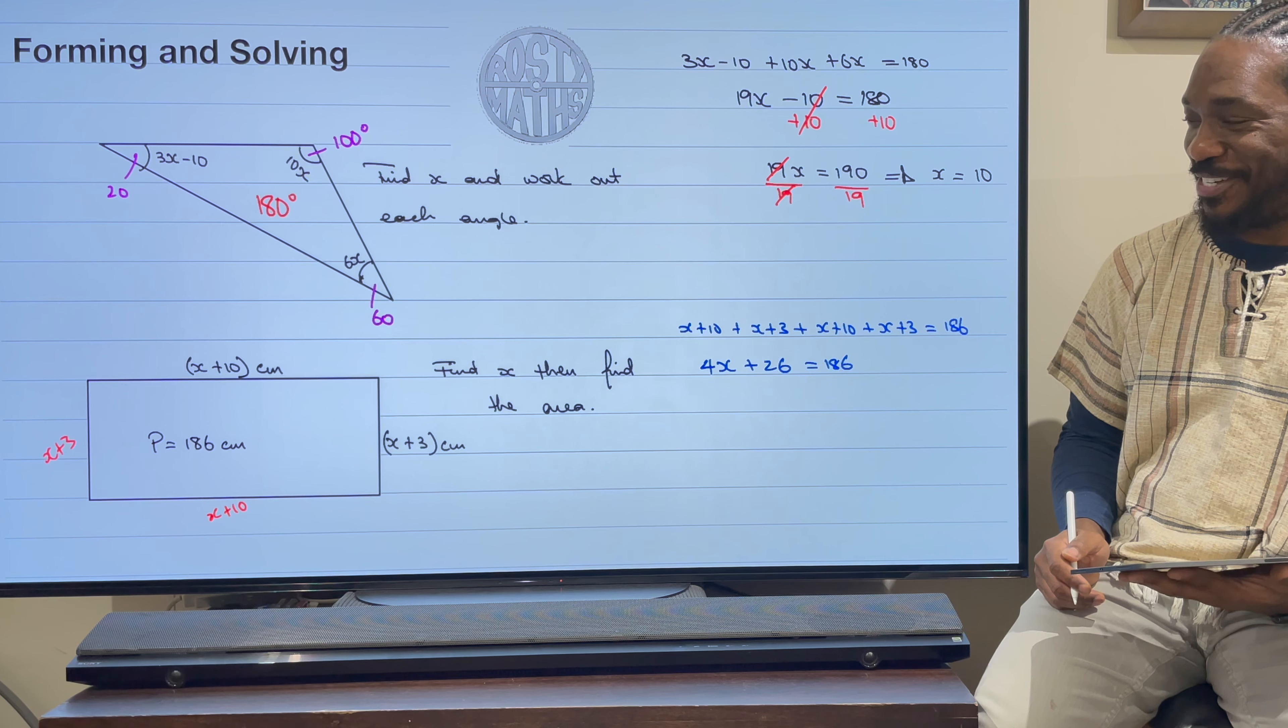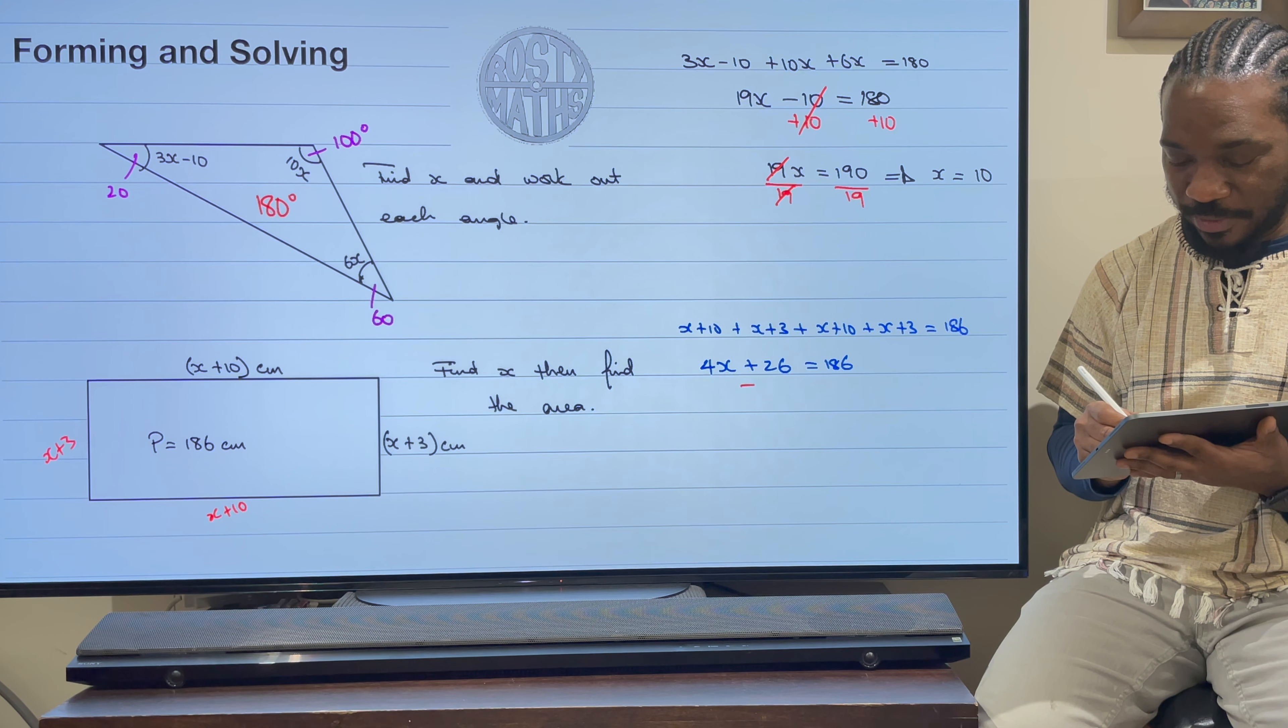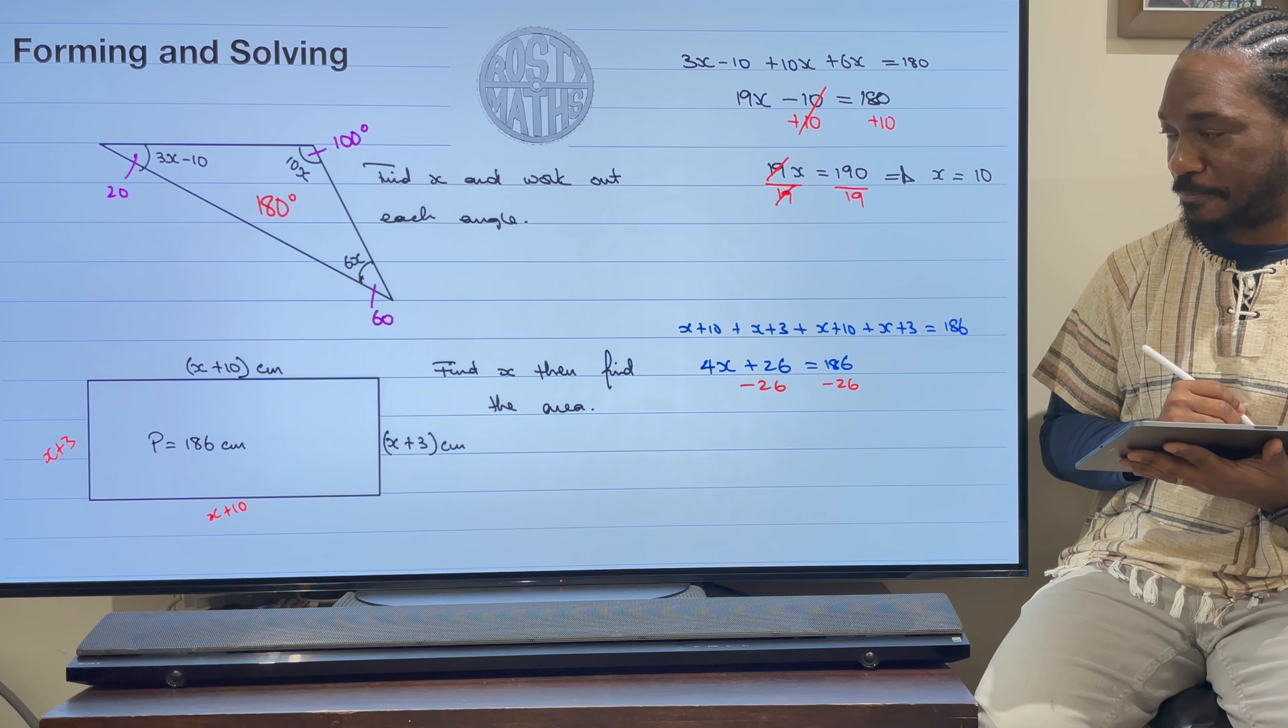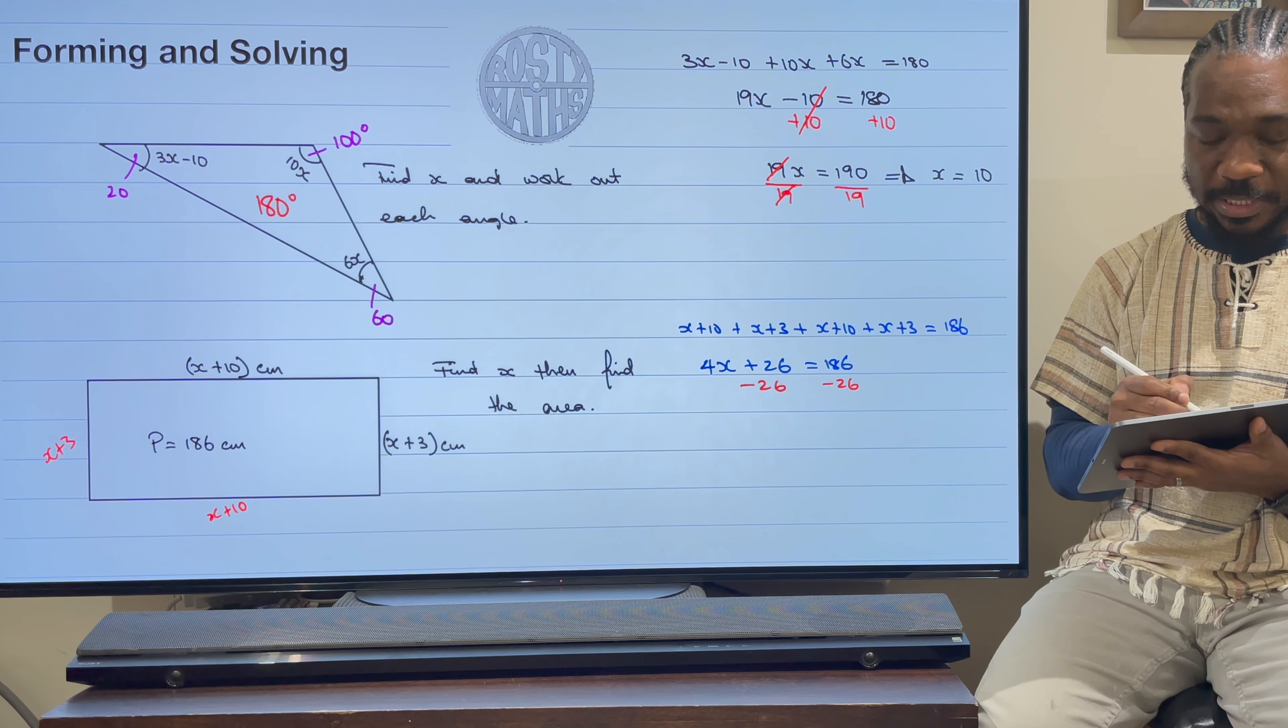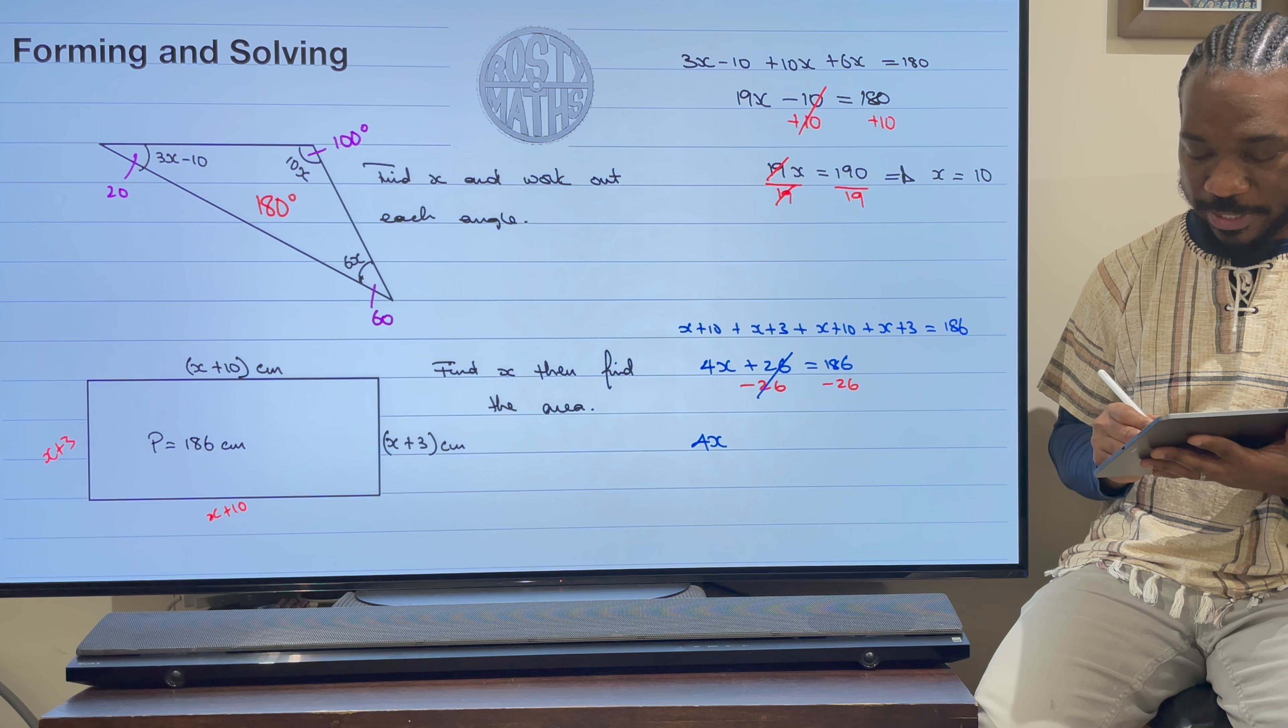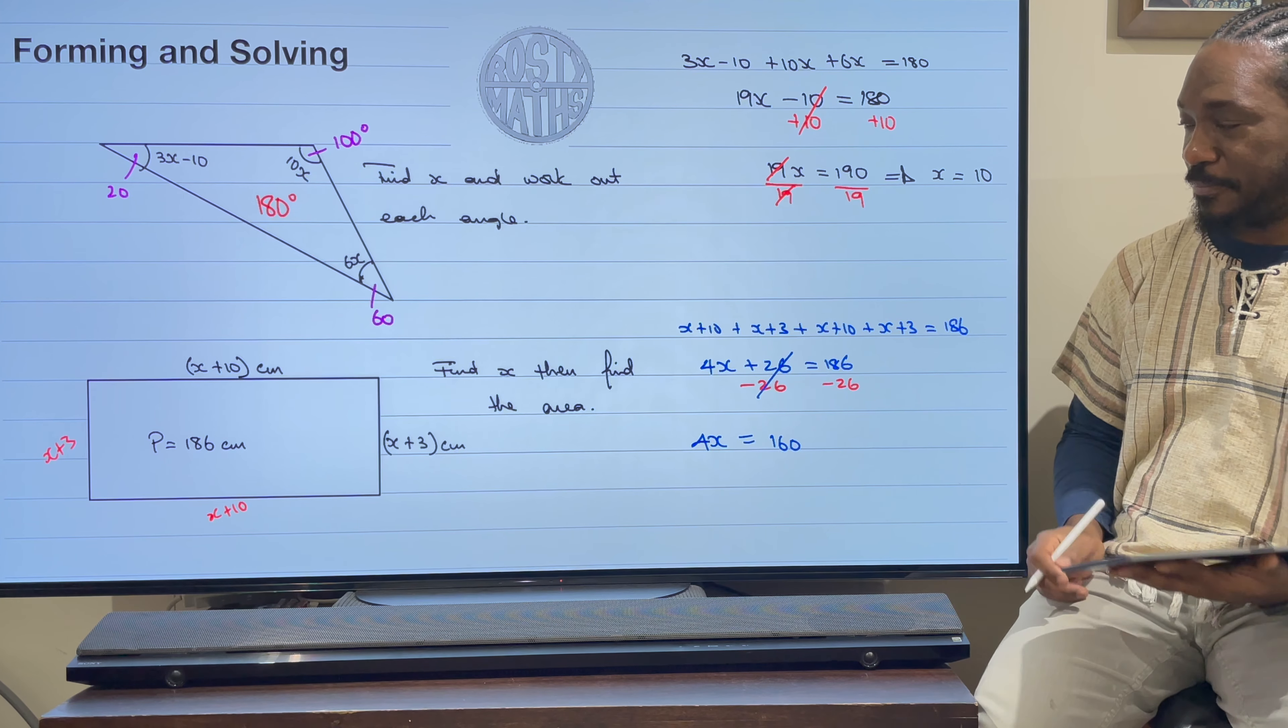Now look at that equation. These keep coming up a lot in this section, isn't it? Now inverse operation says I need to take away 26 and take away 26 there. And then once I do that, these will cancel out, leaving me with 4x is equal to 160 as you take away 26 from 186.